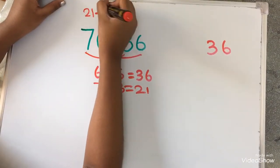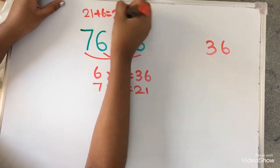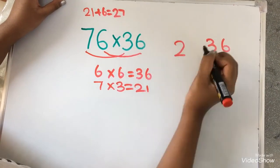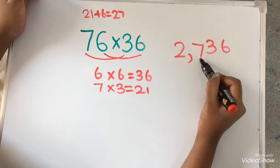So, 21 plus 6 equals to 27. 27, I am going to write it over here. The answer is 2736.